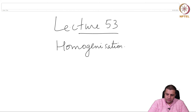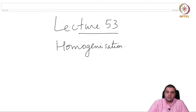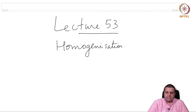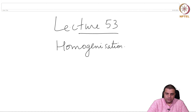This is lecture 53 and this lecture is about homogenization - how we convert a problem about non-graded rings to a problem about graded rings and ideals. There are some advantages, which we saw in the last lecture, for why we should work with projective space.